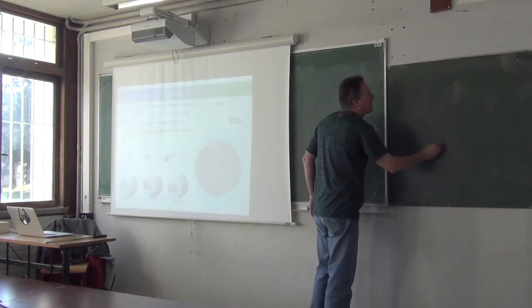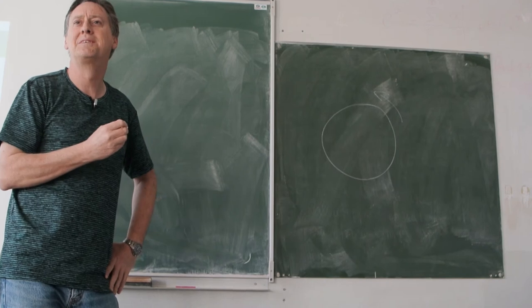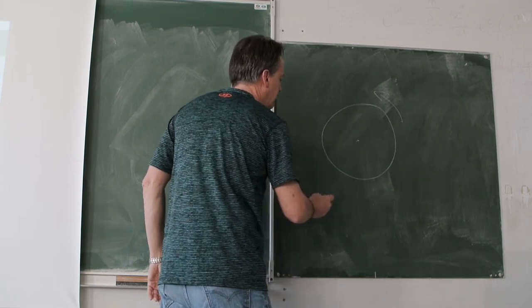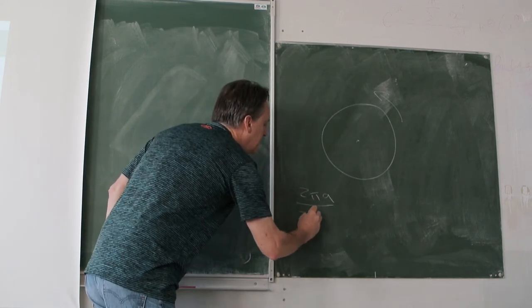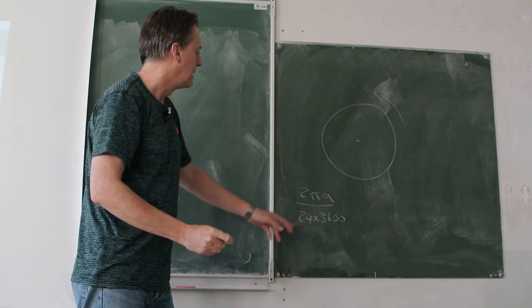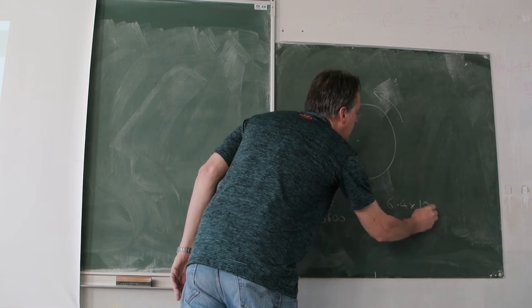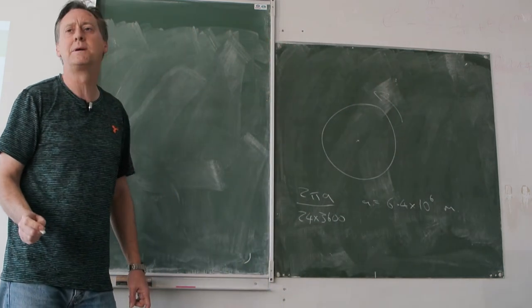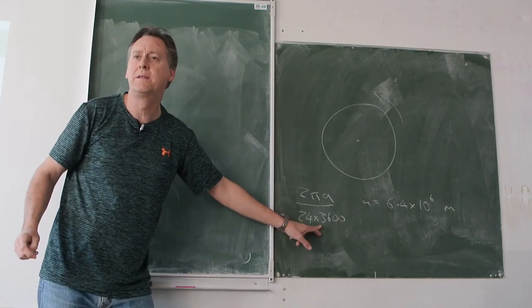So here's the Earth, and it's going around. How fast is it going at the equator? That's the first question. So here's the North Pole. So its speed is distance divided by time, so it's 2π times the radius of the Earth divided by 24 times 3,600. Where a equals 6.4 times 10 to the 6 metres. 6,400 kilometres. Somebody work that out for me. What's this speed? 2π times that divided by that. That'll be in metres per second.